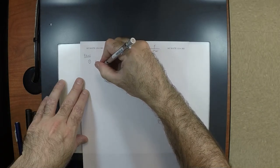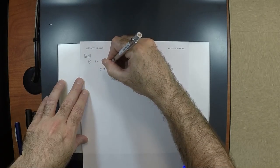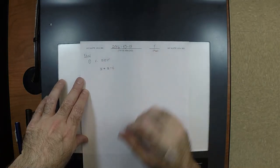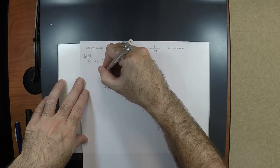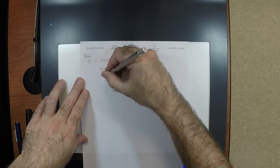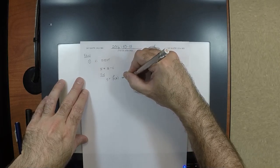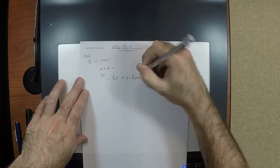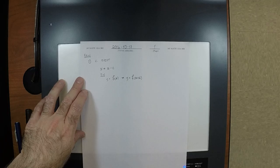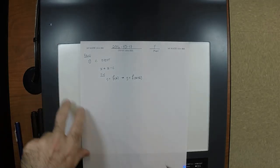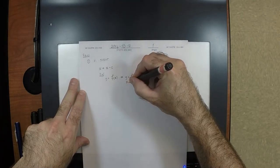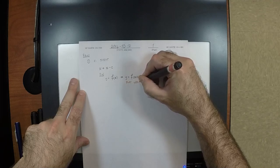Horizontal shift is given by x transforms to x minus c. So for example, I could give y is f of x plus 2. So what would that do? The plot moves left 2.